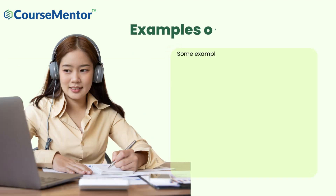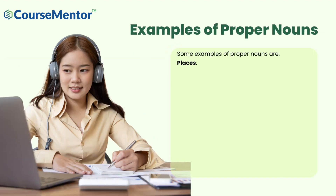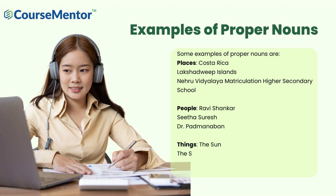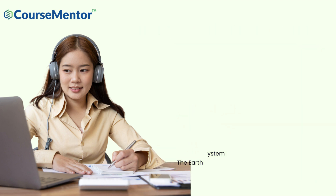Here are some examples of proper nouns. Places: Costa Rica, Lakshadweep Islands, Nehru Vidya Matriculation Higher Secondary School. People: Ravi Shankar, Sita, Suresh, Dr. Padmanabha. And things: the Sun, the Solar System, the Earth.